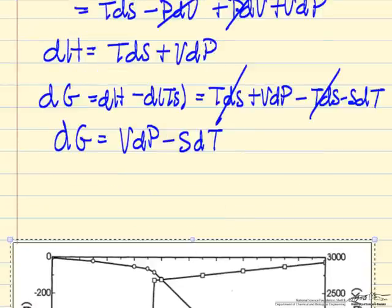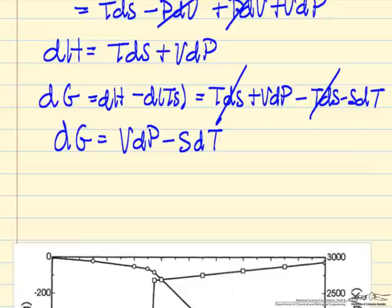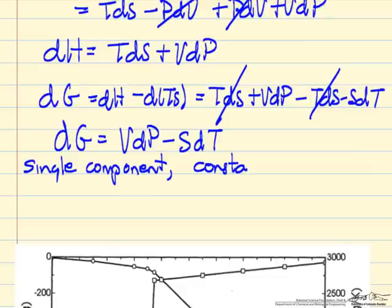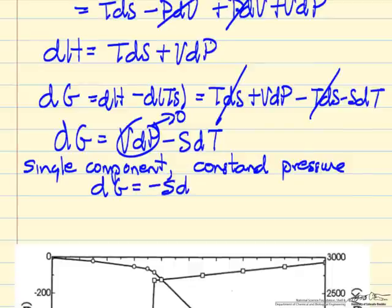First we are going to look at a single component system at constant pressure. This term goes to zero, there is no pressure change, so we are looking at the case dG equals negative SdT. This gives us an idea of how we expect Gibbs free energy to change.